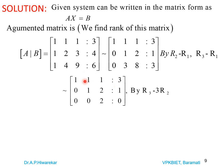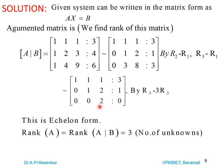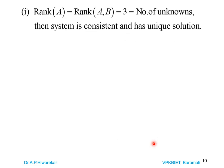After R3 − 3R2, the matrix becomes [1, 1, 1 | 3; 0, 1, 2 | 1; 0, 0, 2 | 0]. All entries below the diagonal are zero, so this is echelon form. Rank(A) equals the number of non-zero rows; all 3 rows are non-zero, so rank(A) = rank(A|b) = 3 = n. The system is consistent and has a unique solution.